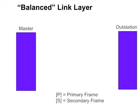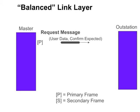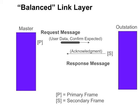This picture shows the difference between primary and secondary frames. In the first example, the master sends an application request message and requests link layer acknowledgement. In this message, the DIR bit is set since the message originated from the master, and the PRI bit will be set since this is a primary message. The outstation then sends an acknowledgement. The DIR bit will not be set in this message because it is from the outstation. The PRI bit will also not be set because this is a secondary message.